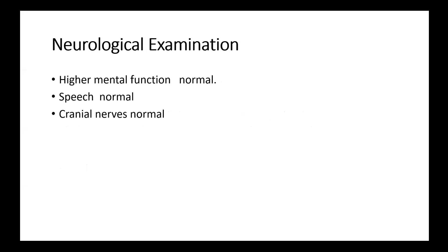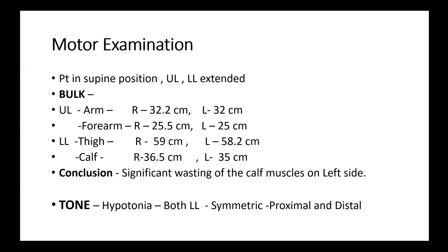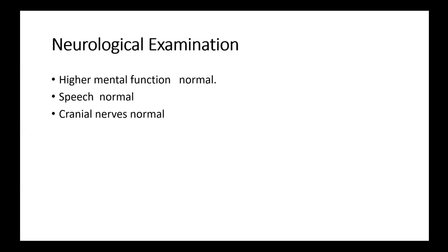Neurological examination: higher mental functions are normal, speech and cranial nerves are normal. An important point — which cranial nerve is simultaneously involved whenever there is a peripheral motor neuropathy? The commonest is the facial nerve. In patients with GBS presenting with quadriparesis, if the facial nerve is affected, it is likely the swallowing muscles and then respiratory muscles may be affected, indicating the disease has progressed upwards.